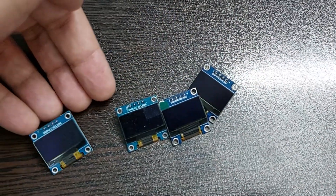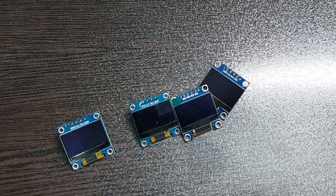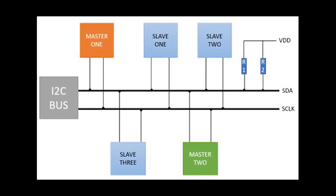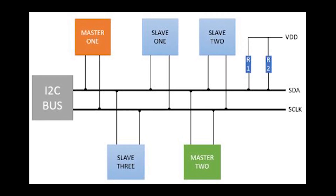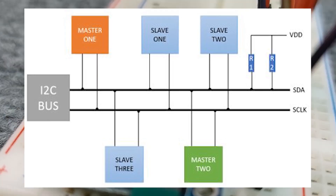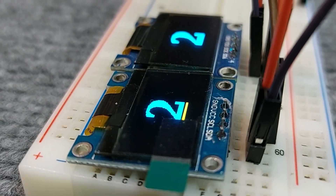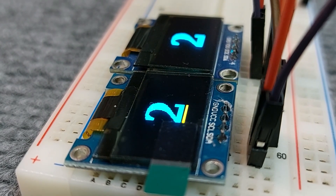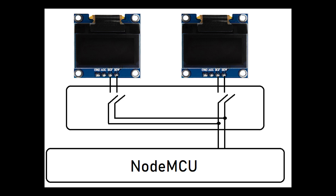I have four displays here, each of which is supposed to show a different number. Because these displays are connected to the microcontroller with the I2C interface, they must have different addresses. But all the addresses are the same, which causes a conflict.